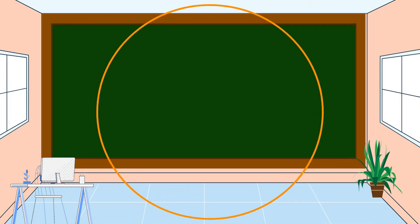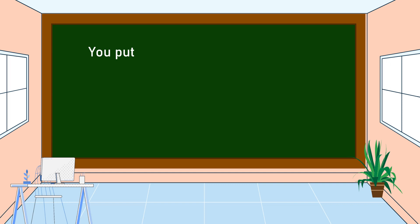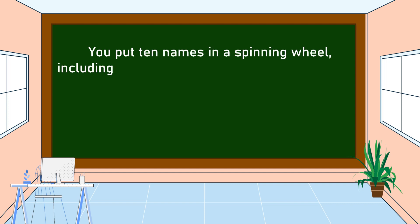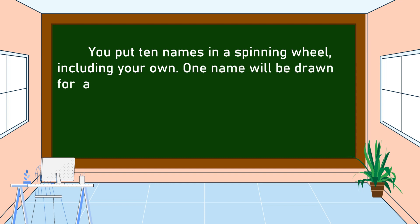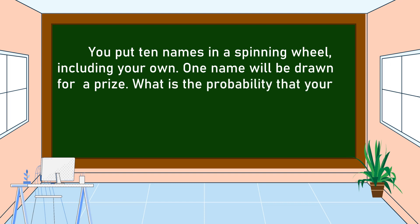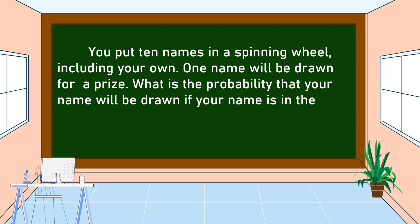This is our second problem. You put 10 names in a spinning wheel including your own. One name will be drawn for a prize. What is the probability that your name will be drawn if your name is in the spinning wheel only once? To answer this problem, we are going to play with a spinning wheel — watch and observe how it works.